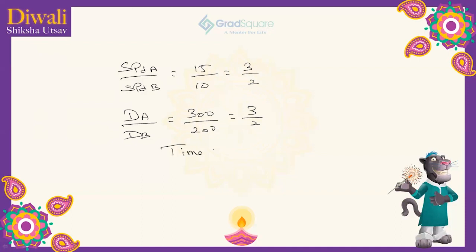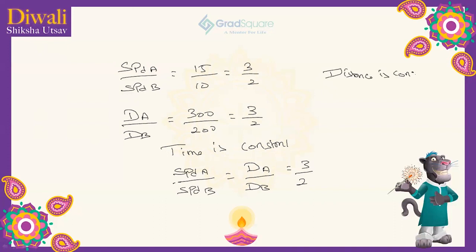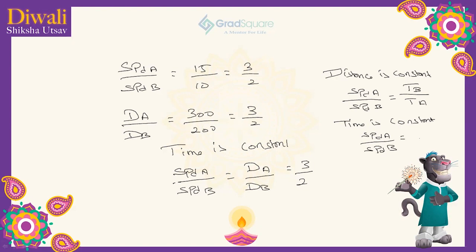So when time is constant between two people, the ratio of speed of A and B is equal to the distance traveled by A by distance traveled by B. Also, speed of A by speed of B is inversely proportional to the time taken, so it becomes time taken by B by time taken by A. When time is constant, speed of A by speed of B is directly proportional to the distance traveled.